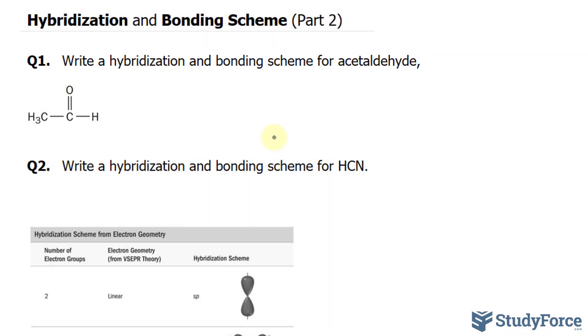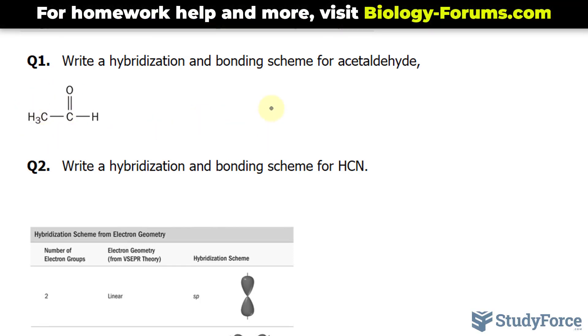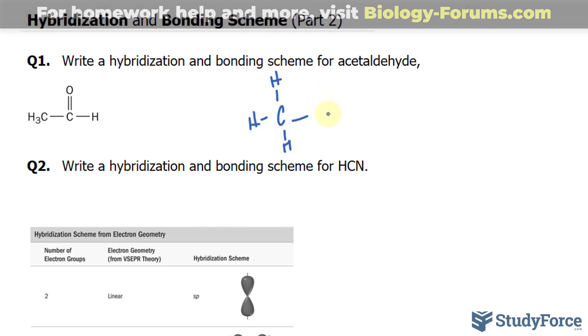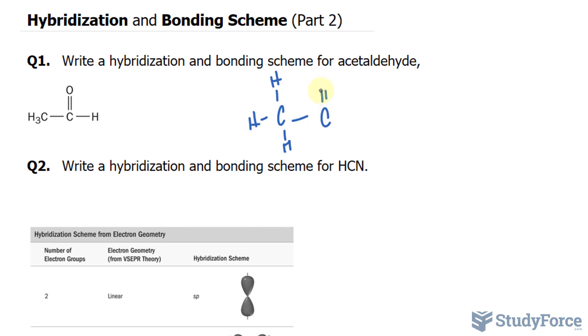The first thing that I want to do, just like what we did in part one, is create the Lewis structure for this. So I will rewrite this as C bonded to three hydrogens, that's bonded to another carbon, and that's double bonded to an oxygen and one hydrogen.